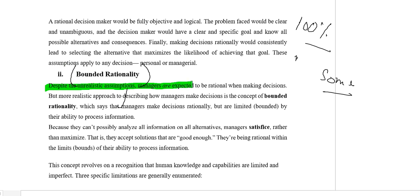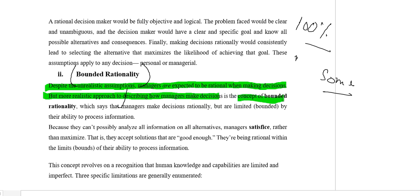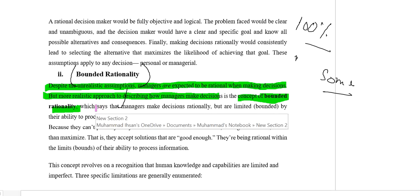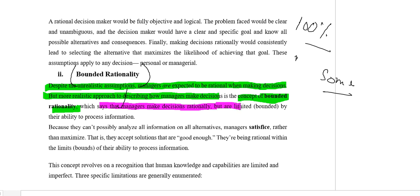Despite the unrealistic assumption, managers are expected to be rational when they make decisions. This is an assumption which is unrealistic because rationality is not 100% perfect — it is basically bounded rationality, where the manager does not have full access or capability to cover all the facts and figures and take a fully logical decision. But the more realistic approach to describing how managers make decisions is the concept of bounded rationality, which tells us that managers make decisions rationally but they are limited.